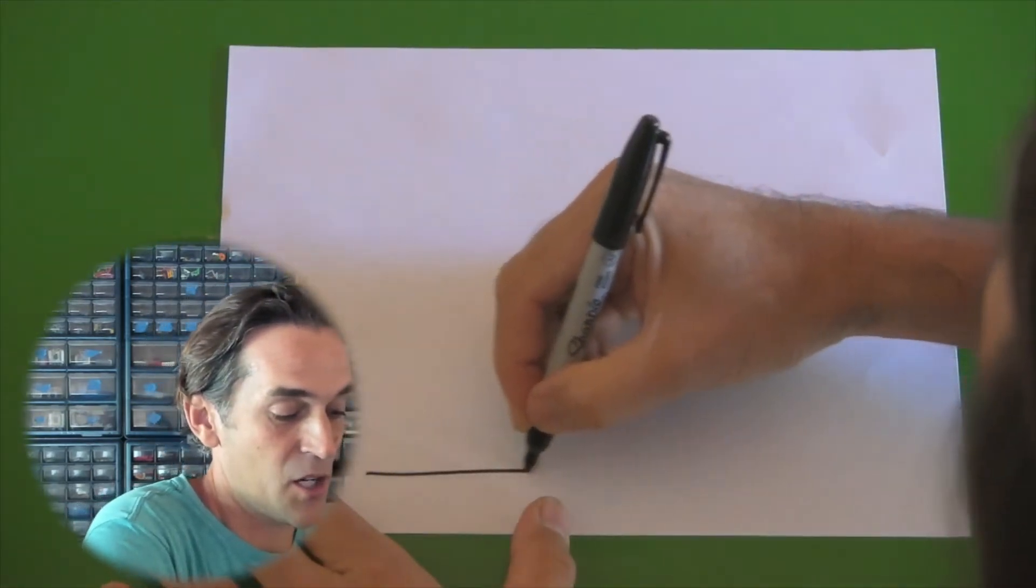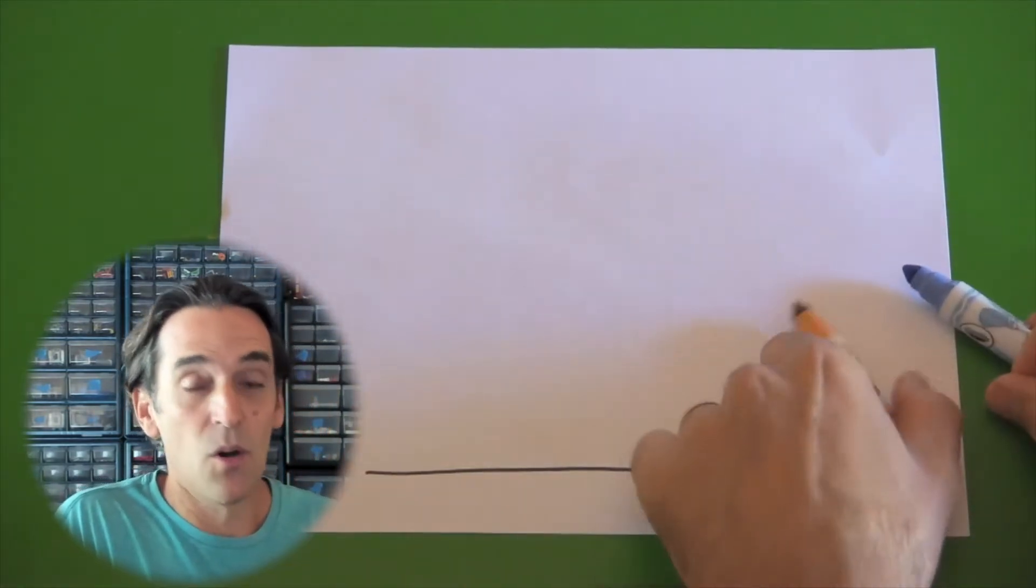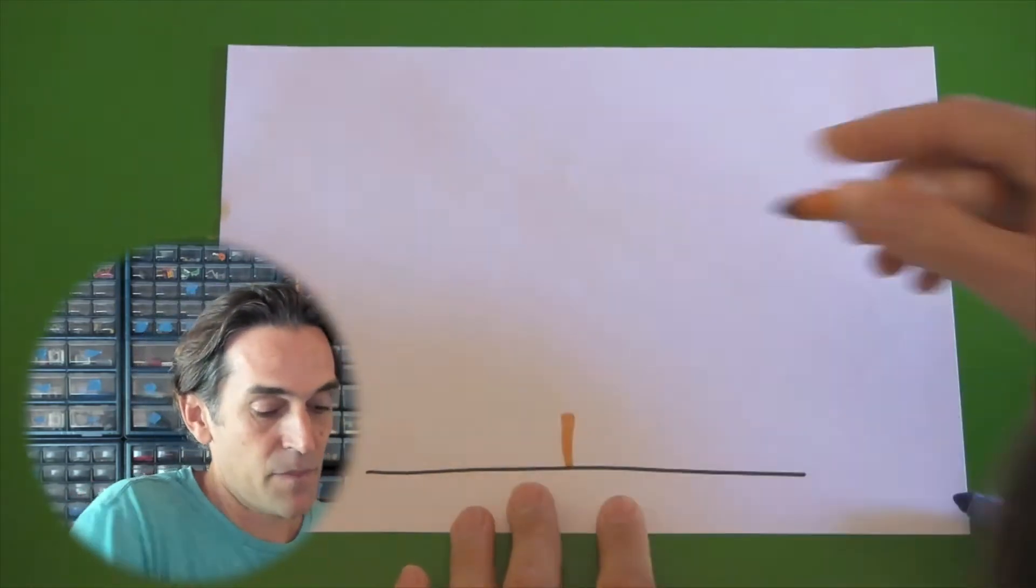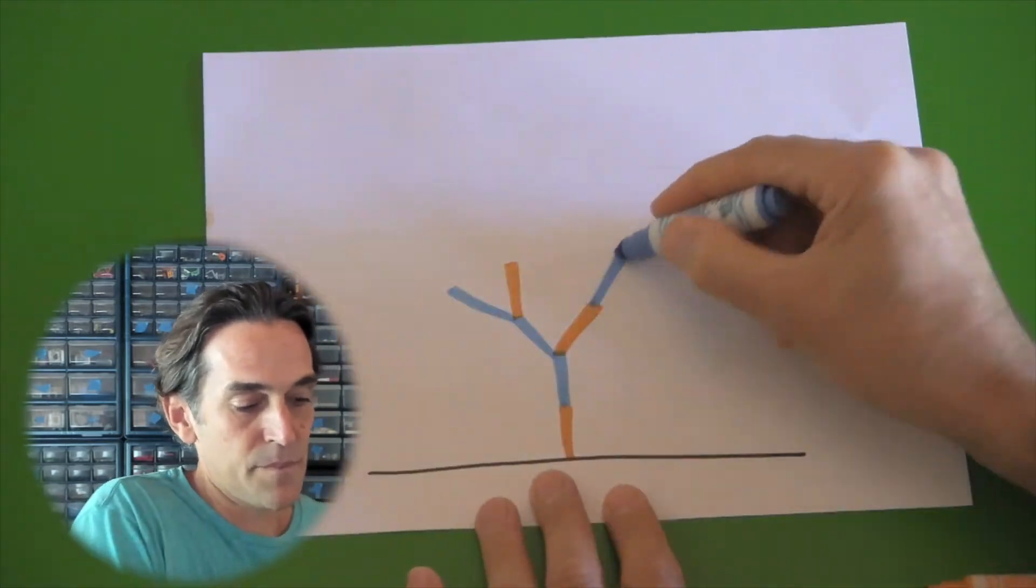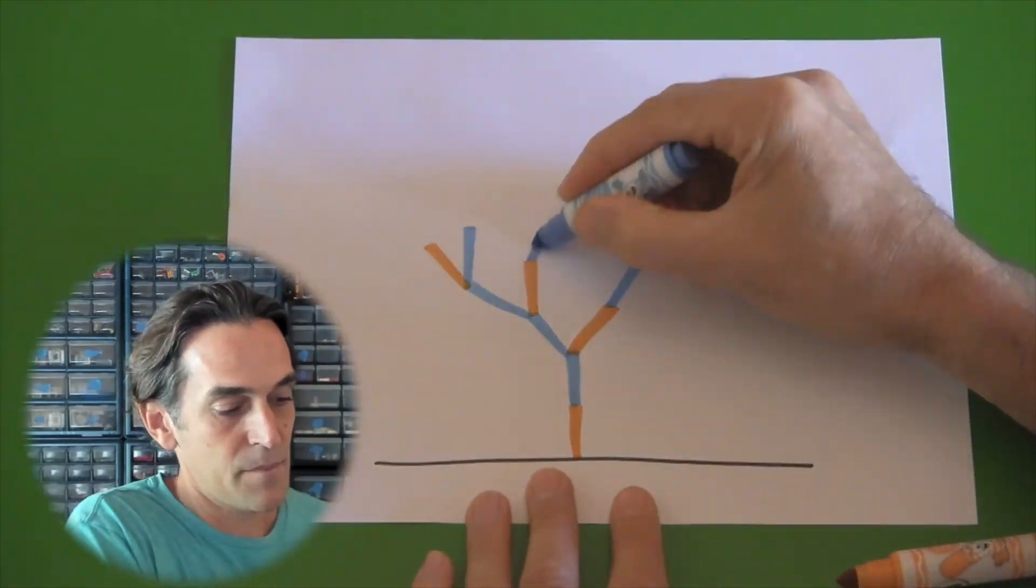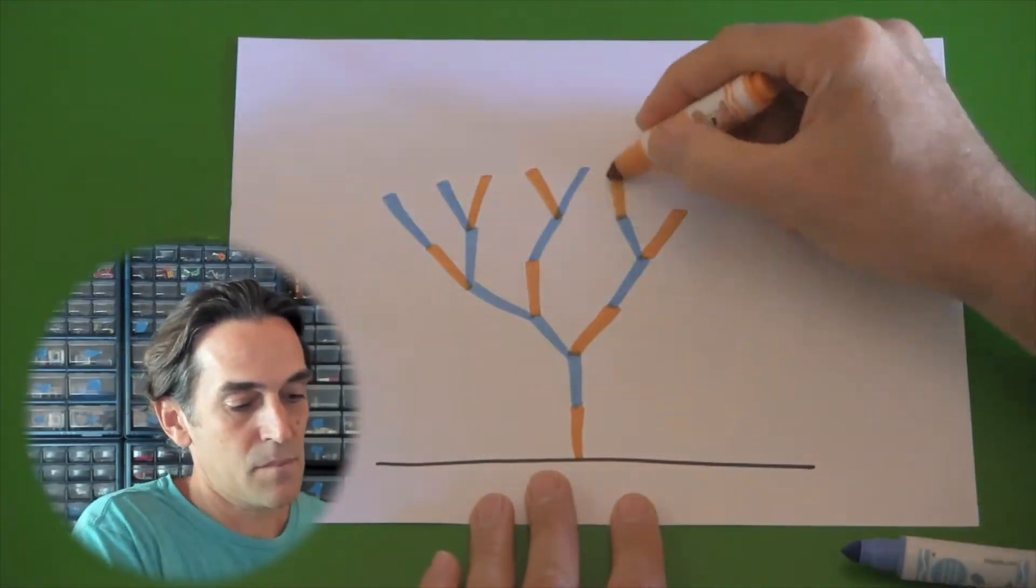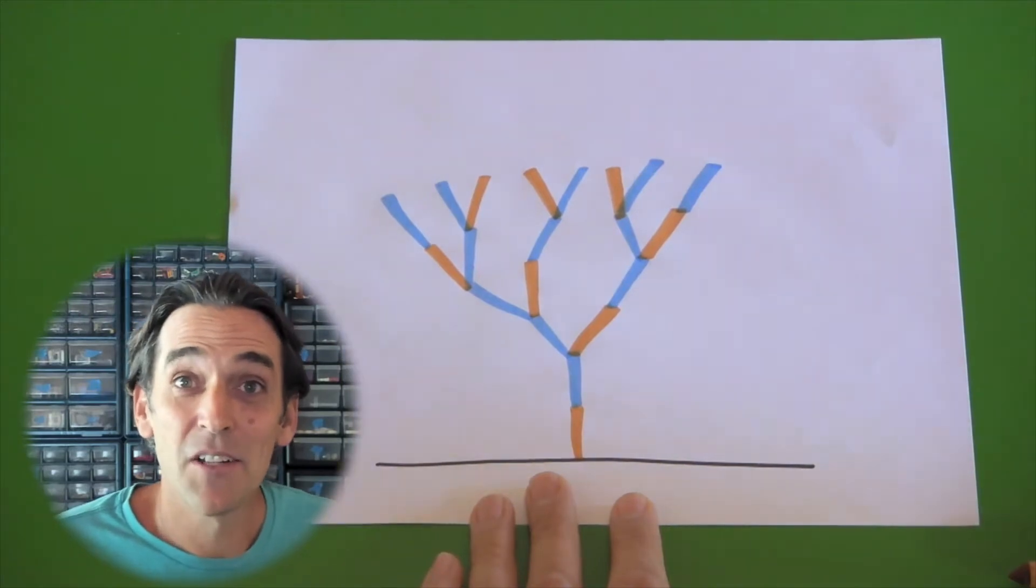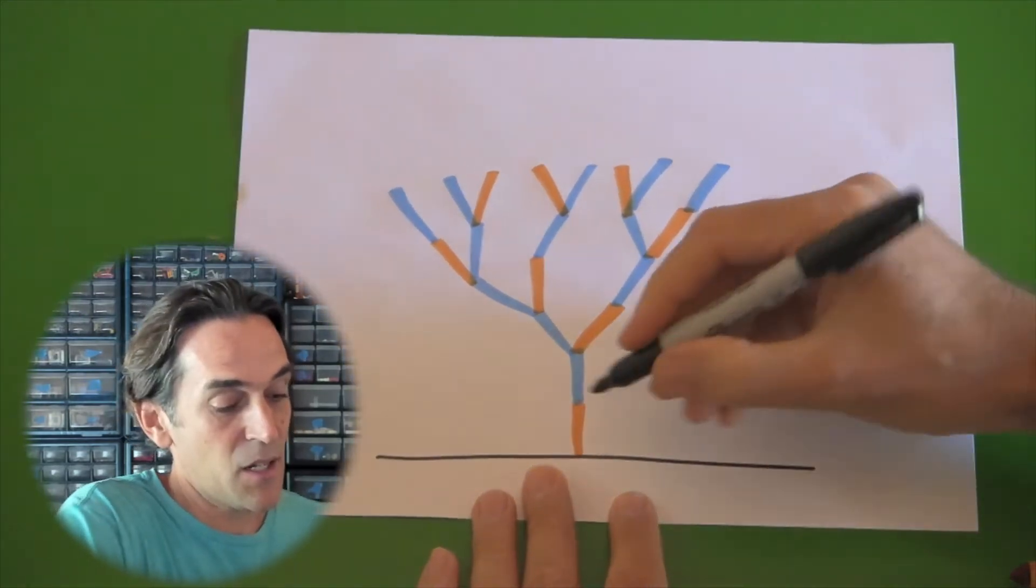Let's start our tree. I'm going to draw a ground level here. And remember the rules for the two colors. Orange will continue to grow. Blue will branch. So you can see it's starting to look like an interesting tree drawing.